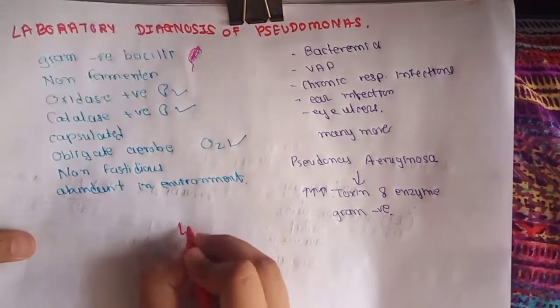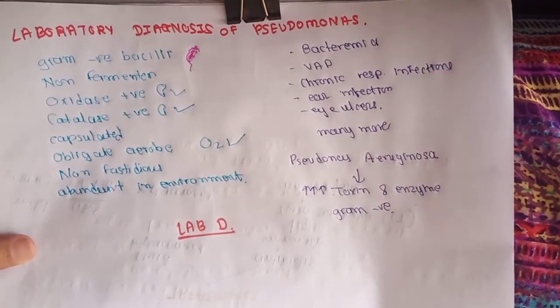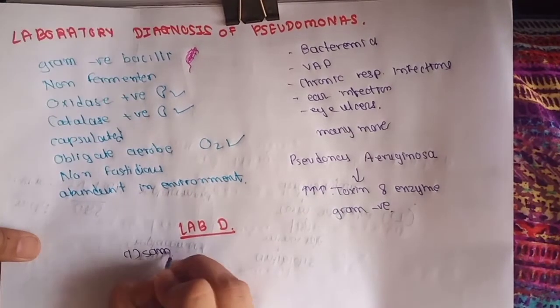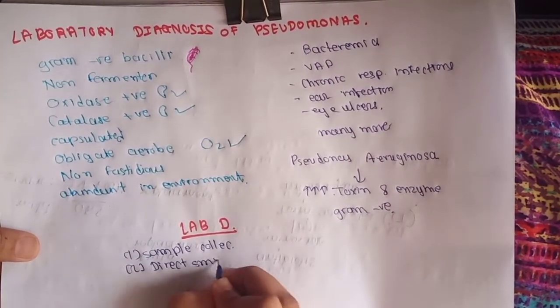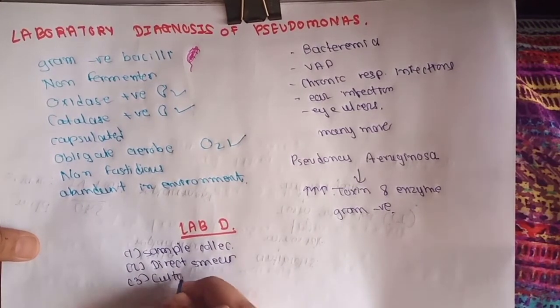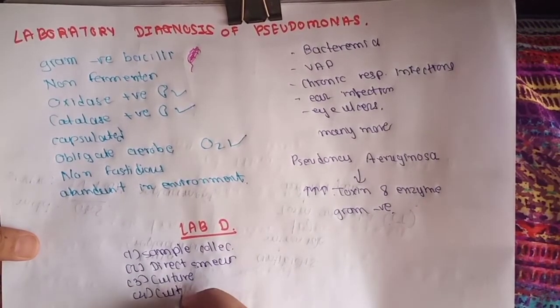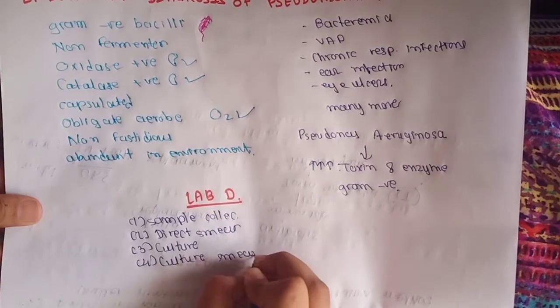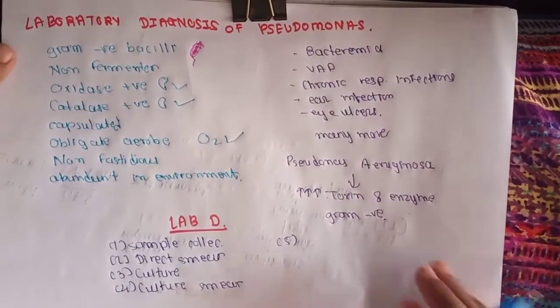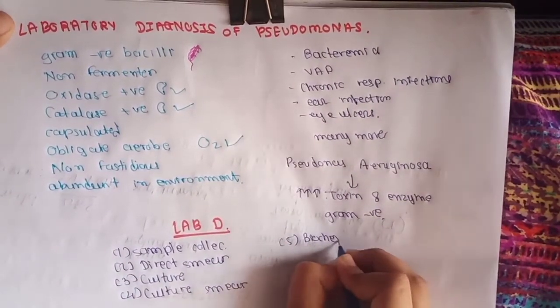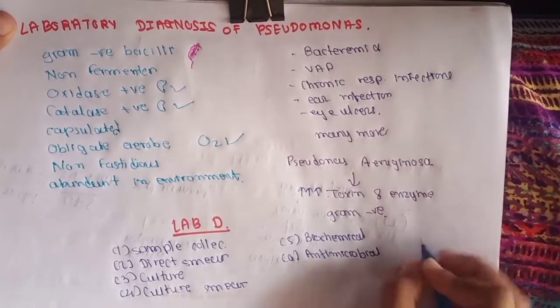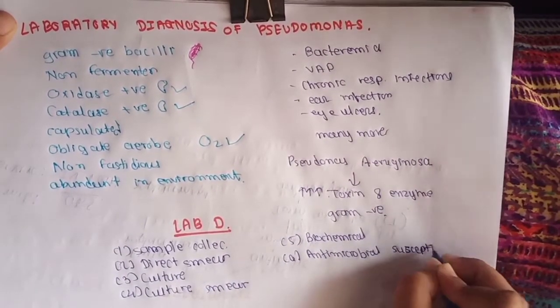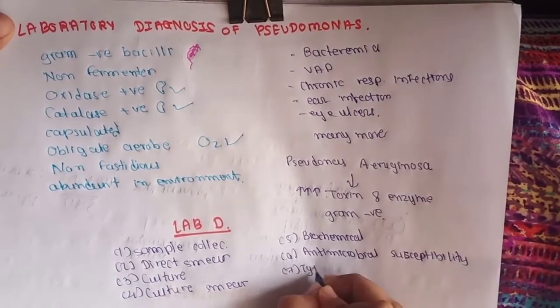Let's start our topic: laboratory diagnosis of Pseudomonas. The first method is specimen collection, second is direct smear microscopy, third is culture, fourth is culture smear and motility, fifth is biochemical identification, sixth is antimicrobial susceptibility test, and the last is typing of Pseudomonas. We will describe each of them in this video.